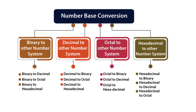These are the kinds of number base conversions: binary to decimal, binary to octal, binary to hexadecimal; decimal to binary, decimal to octal, decimal to hexadecimal; octal to binary, octal to decimal, octal to hexadecimal; hexadecimal to binary, hexadecimal to decimal, hexadecimal to octal.